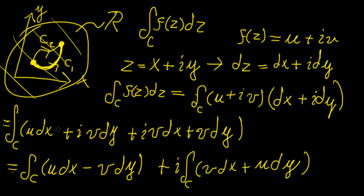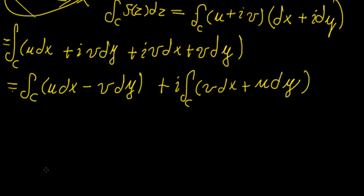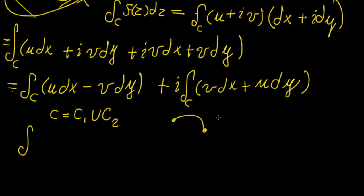A lot of the stuff we have seen with line integrals before applies the same properties. For example, we know the linearity property of line integrals: if a curve is actually the union of two or more curves — where union represents just a connection — so if we have curve c and split it into sections c1 and c2, then c is just the union of those two curves.